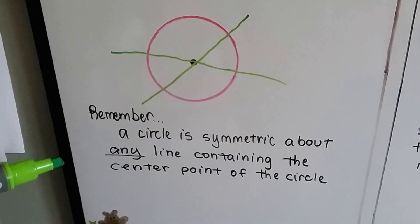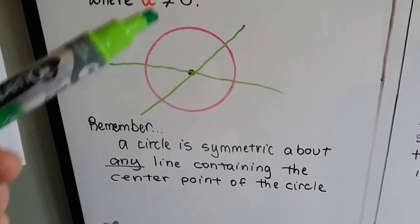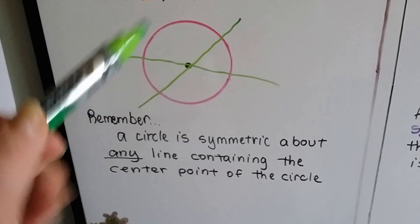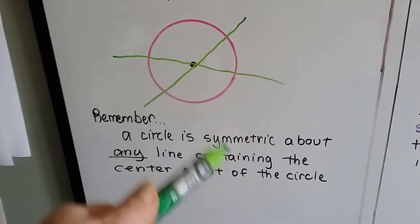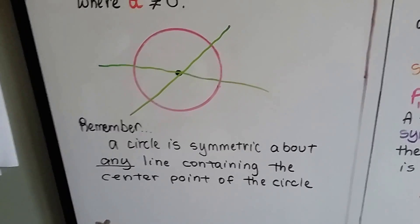You should remember that a circle is symmetric about any line containing the center point of the circle. So we can fold it along this line. We could draw a line this way and fold it that way. It's still going to be symmetrical. We could draw hundreds of lines and it wouldn't matter. It would be symmetrical either way because it's a circle.